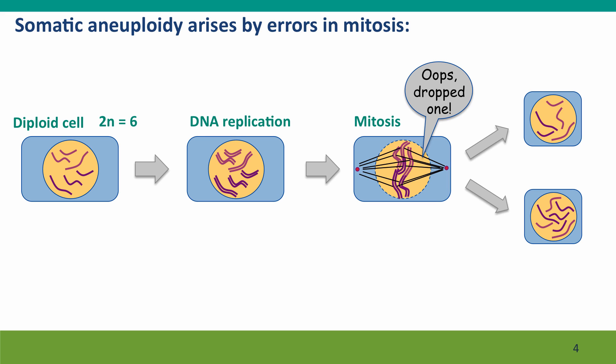Basically, the mitotic spindle drops a chromosome — makes a mistake, lets go of a chromosome too soon, or fails to attach to the chromosome — and the normal checkpoints that try to ensure that everything is correct before the cell divides sometimes still fail. The consequence is that although the original cell had two copies of each chromosome, one daughter cell has only one copy of this middle-sized chromosome, and this one has three. We describe this cell as 2n-1, and this cell as being 2n+1.